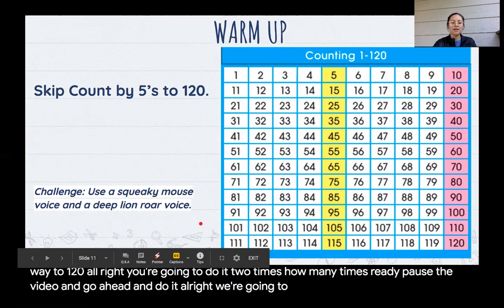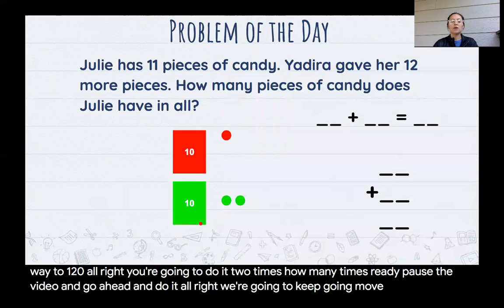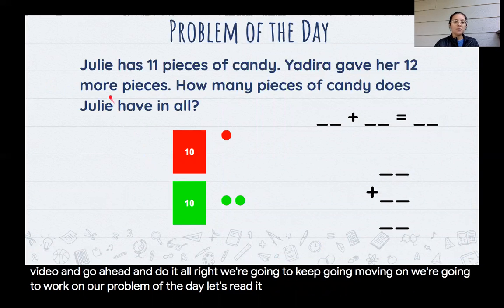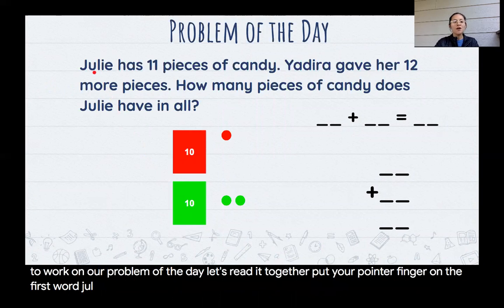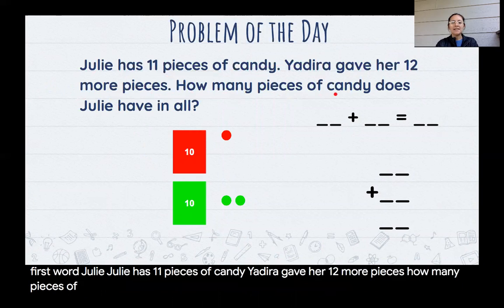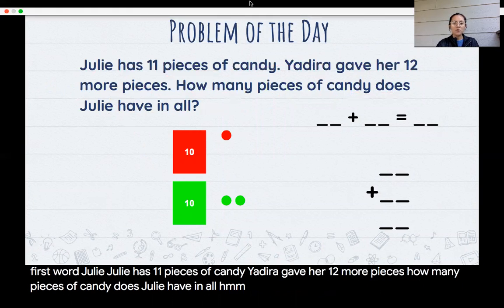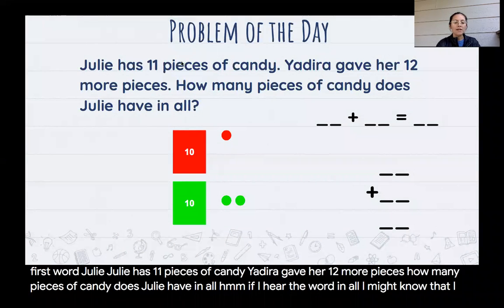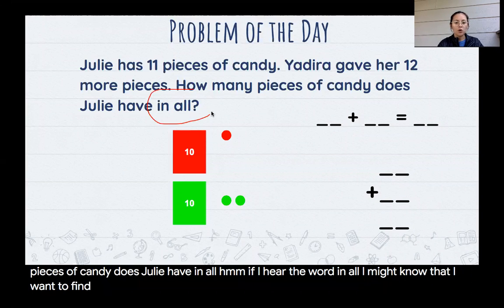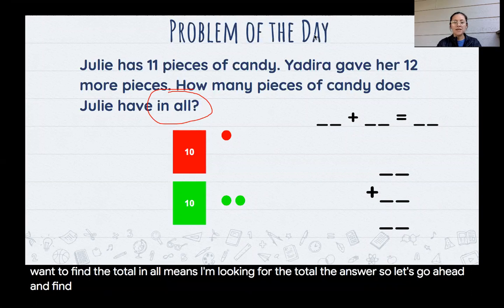All right, we're going to keep going. Moving on, we're going to work on our problem of the day. Let's read it together. Put your pointer finger on the first word, Julie. Julie has 11 pieces of candy. Yadira gave her 12 more pieces. How many pieces of candy does Julie have in all? If I hear the word in all, I might know that I want to find the total. In all means I'm looking for the total, the answer.